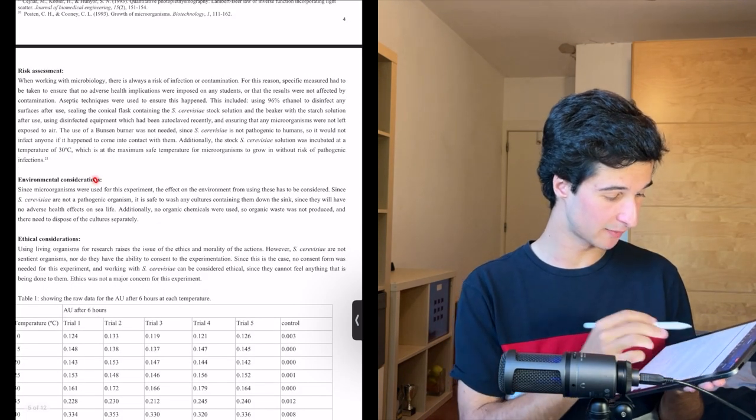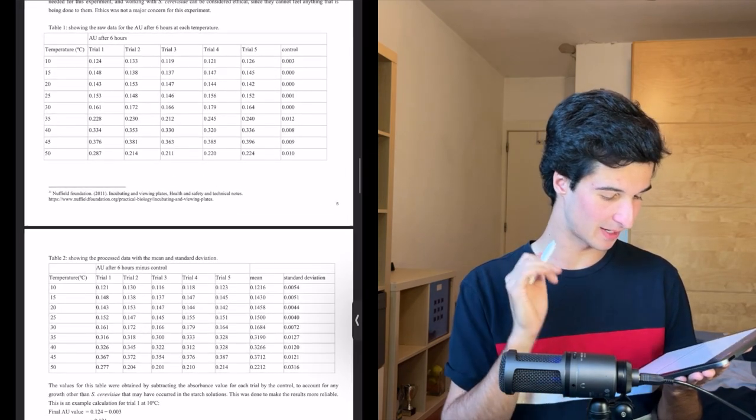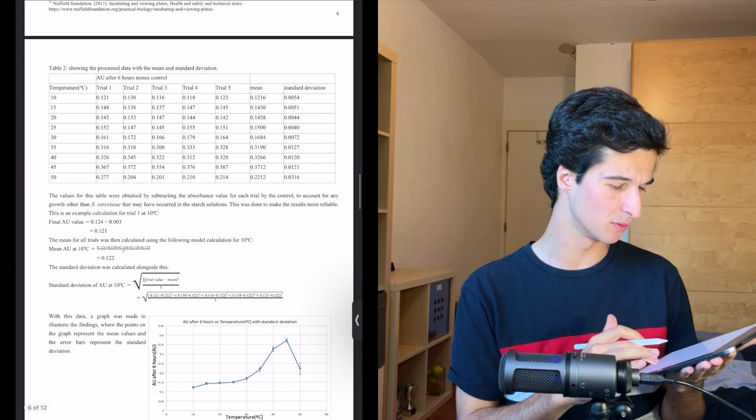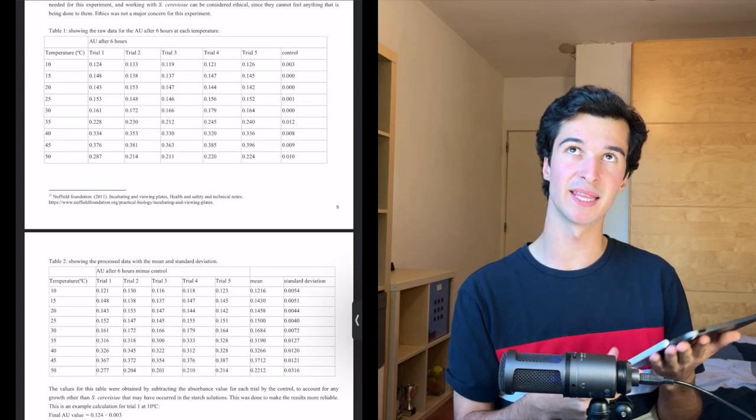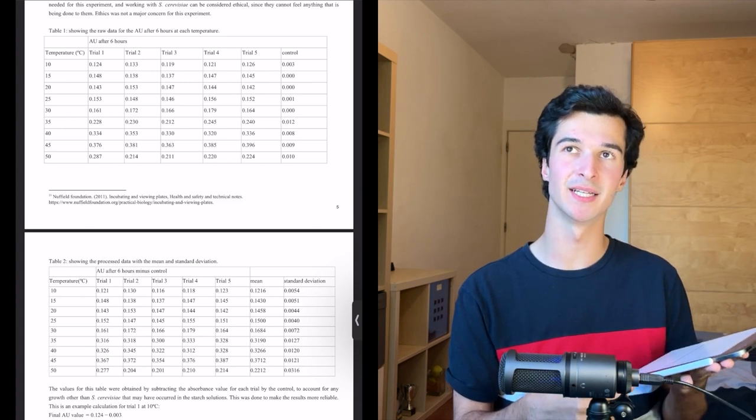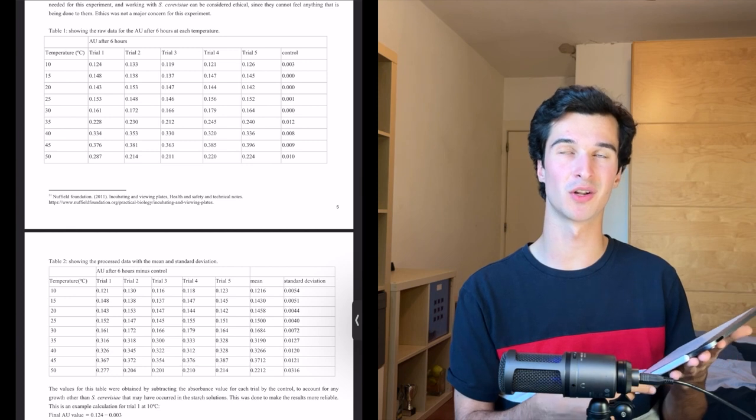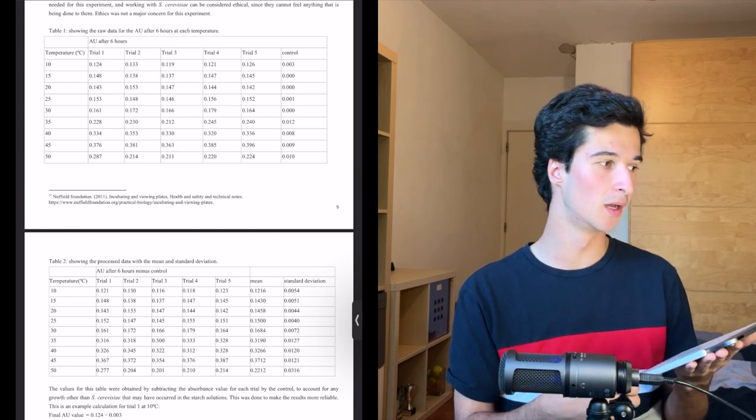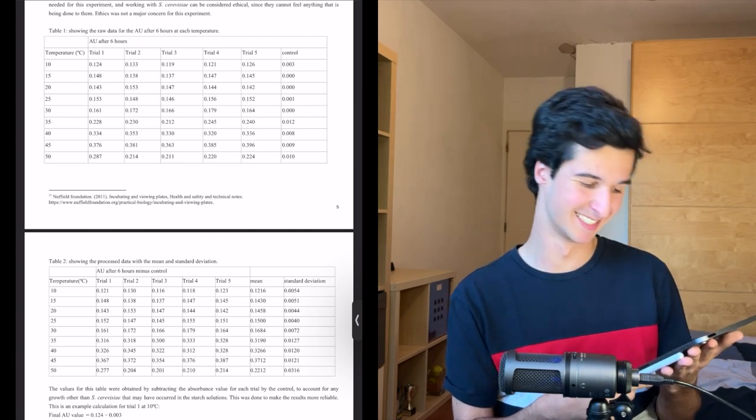So risk assessments, environmental, ethical considerations, whatever. And then I have, again, huge tables of raw data. I don't understand why they make us include all of this raw data. I sort of get it that like, all of this raw data is important for them to go through and make sure that you're not just making things up. But you wouldn't see this in a paper.